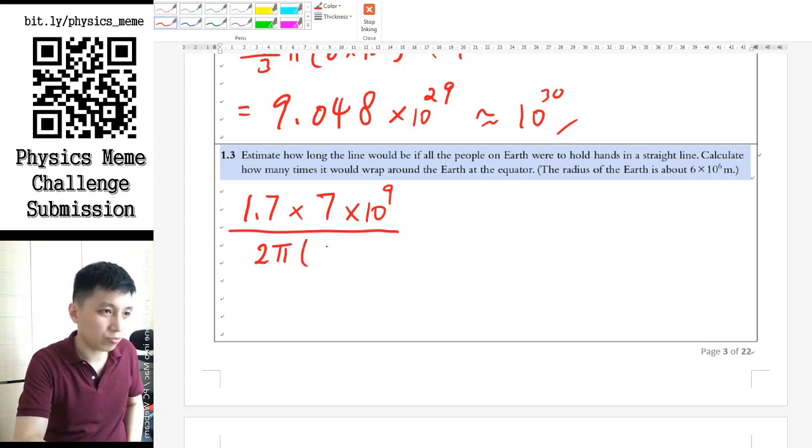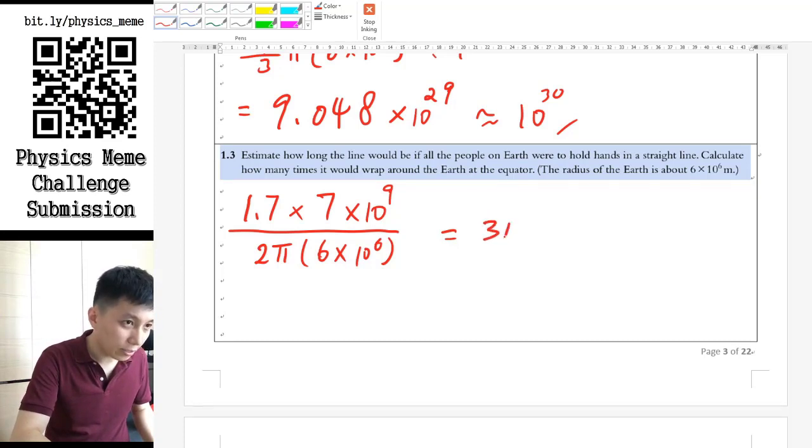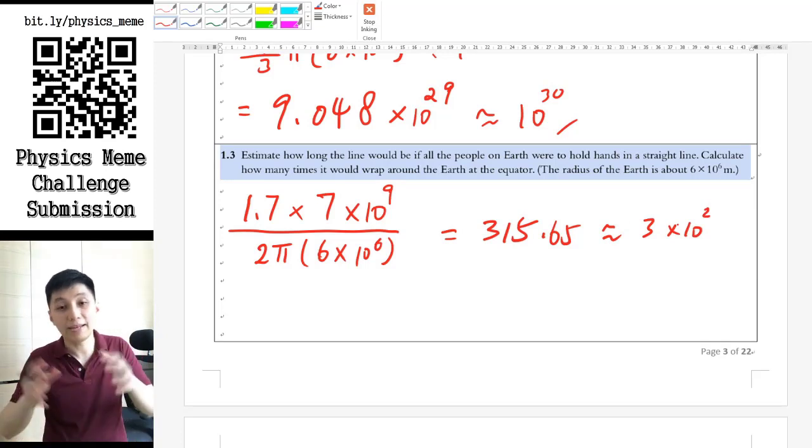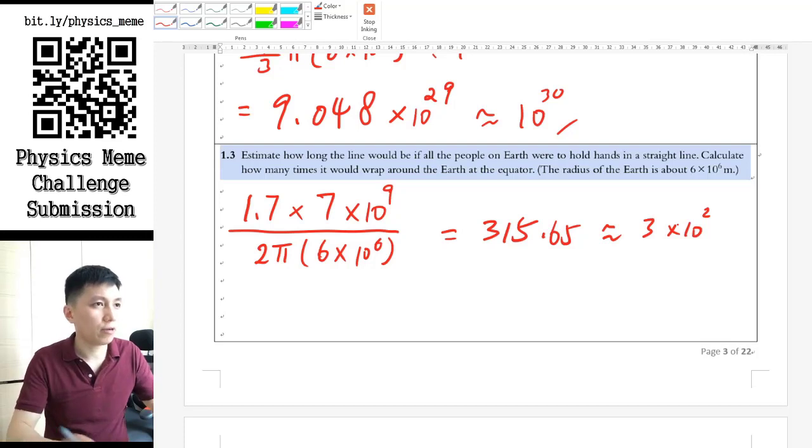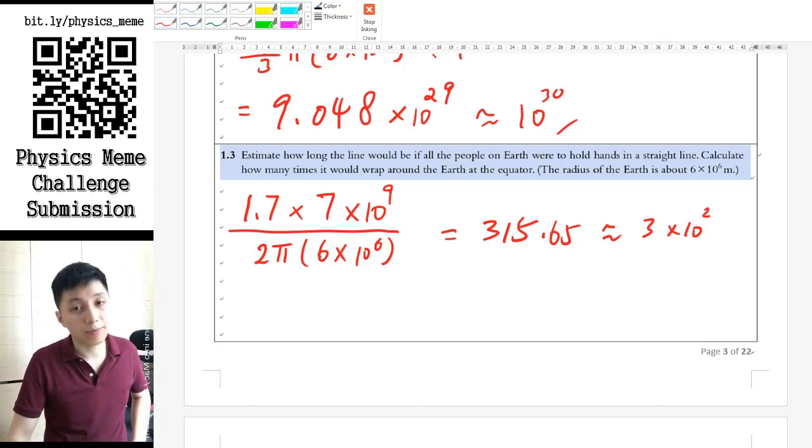Alright. So the r actually, I'll just write down directly 6 times 10 to the power of 6. So in this case, you can do the estimation by yourself. So if you use your calculator, you'll find out it's roughly 315.65 something. Alright. So it's around 3 times 10 to the power of 2, that many times around the earth.